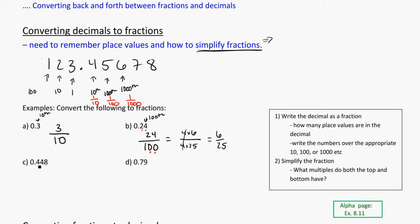My next example, 1, 2, 3 place values, so I need three zeros on the bottom. And I also know that that's tenth, hundredth, thousandth places. So that's 448 over 1000. And I need to reduce this fraction again. It's a big number.